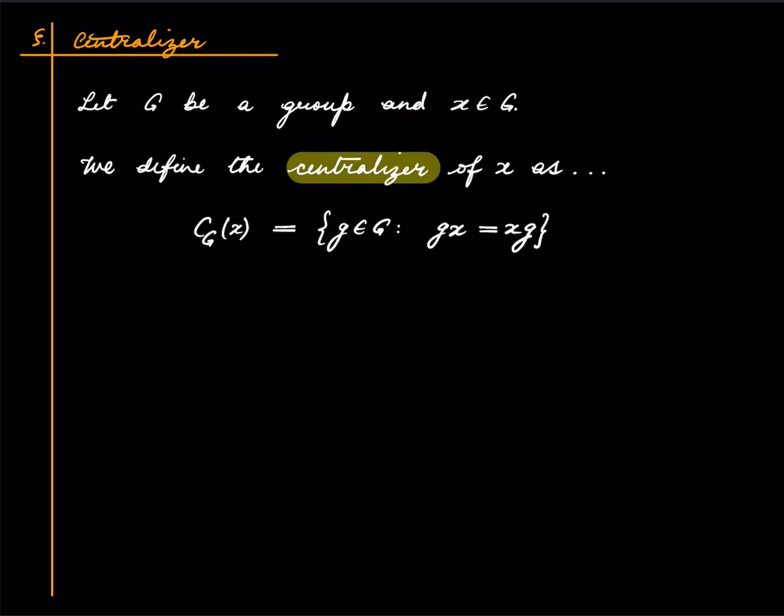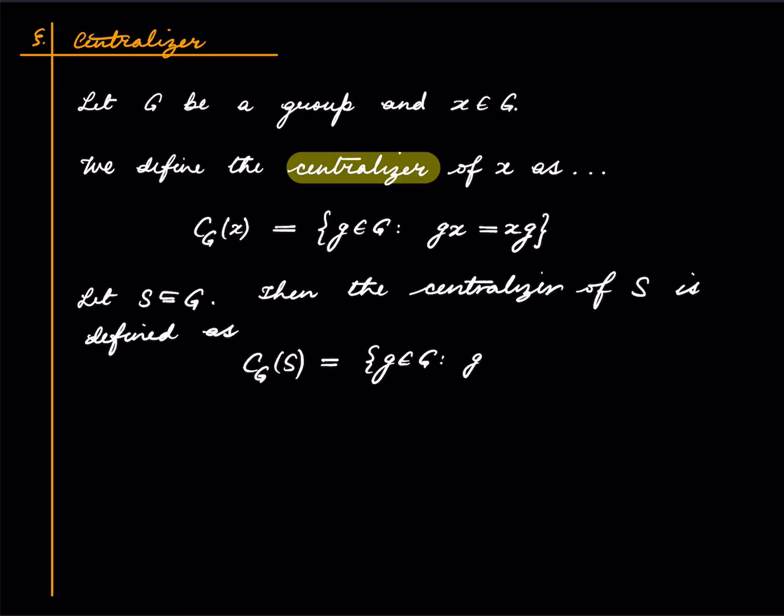So that's the centralizer of x. And if S is just any subset of the group then the centralizer of S is defined as those elements in G which commute with every element of S.